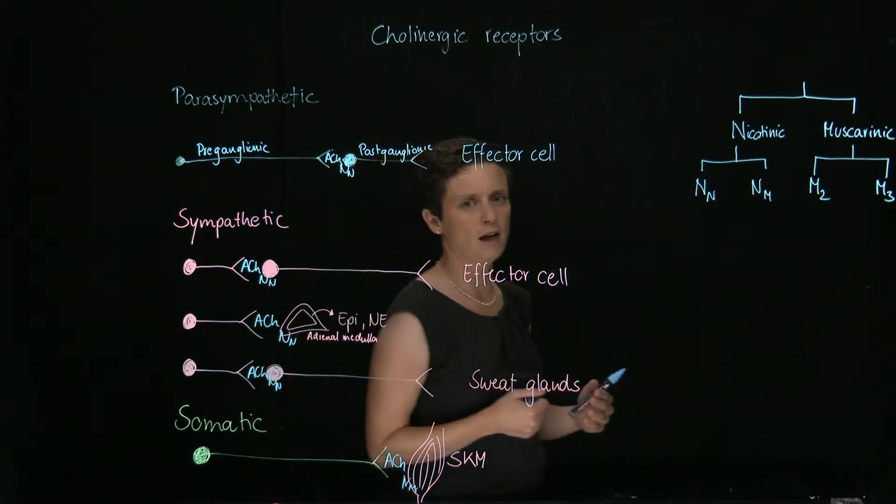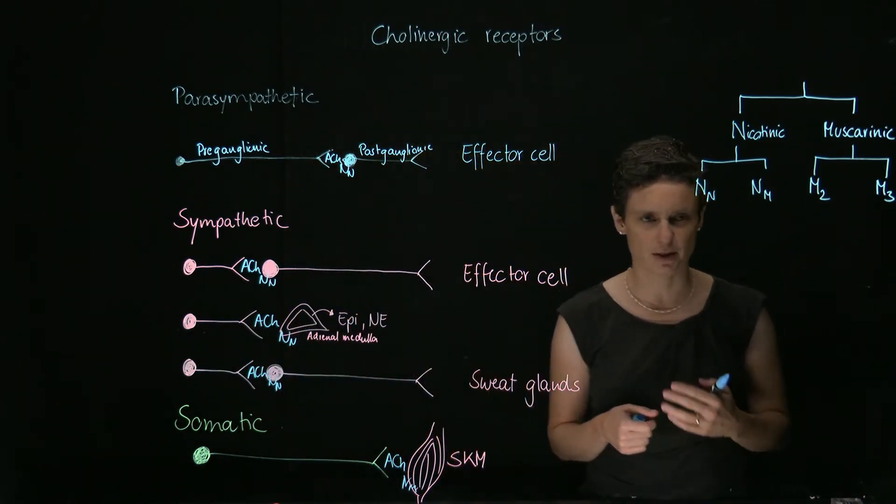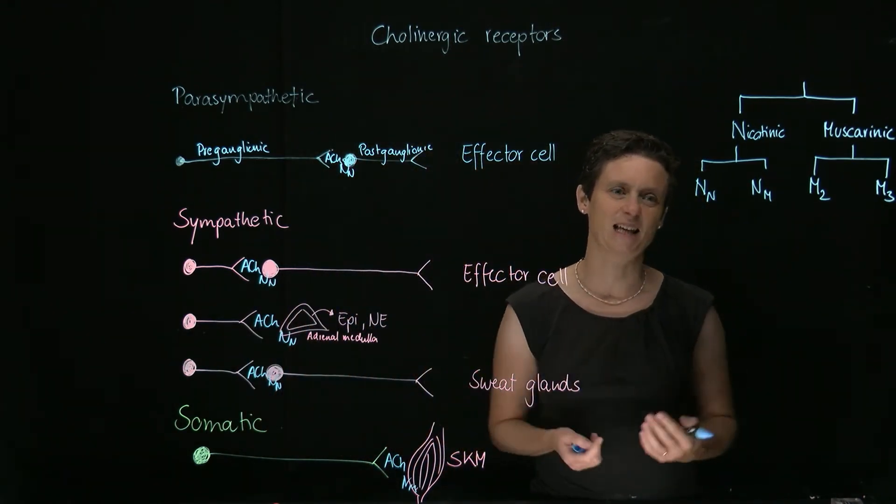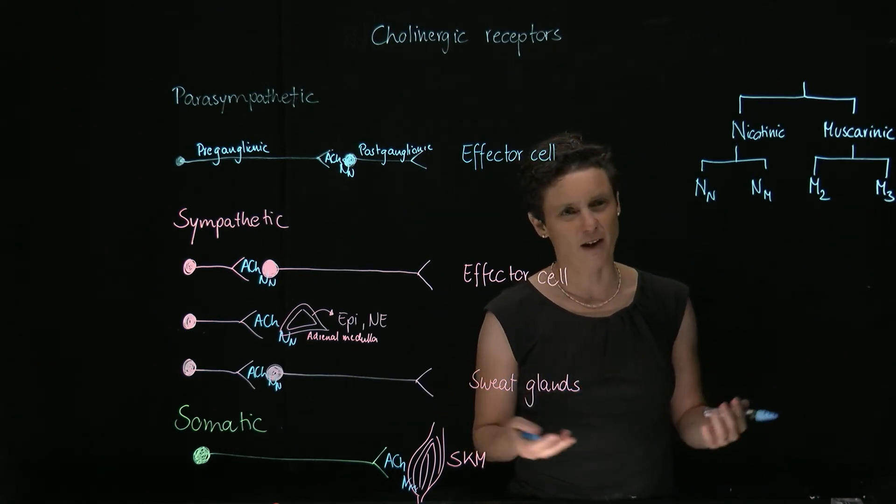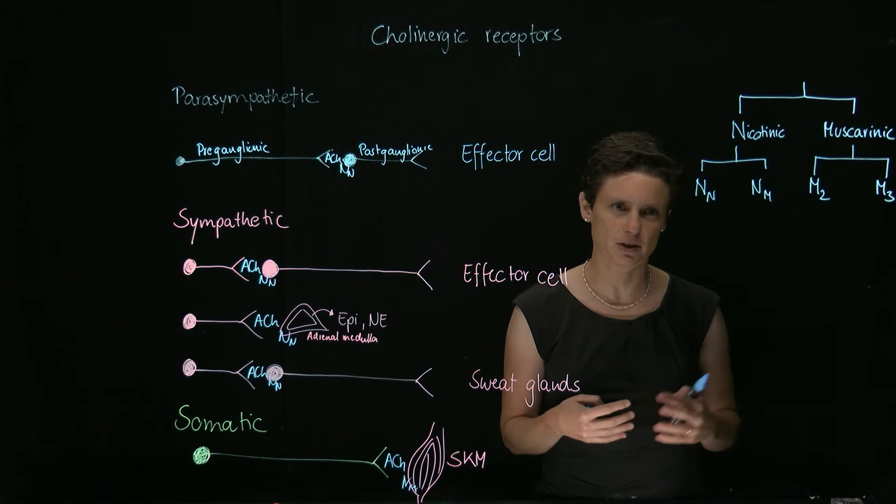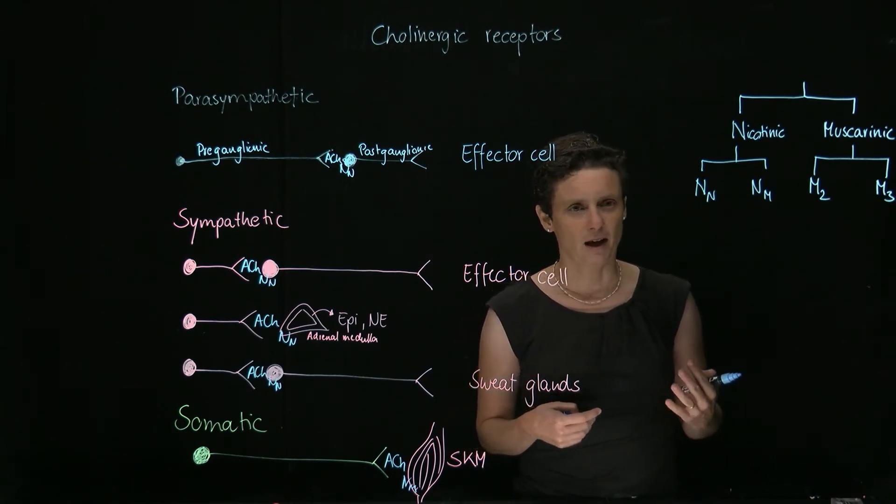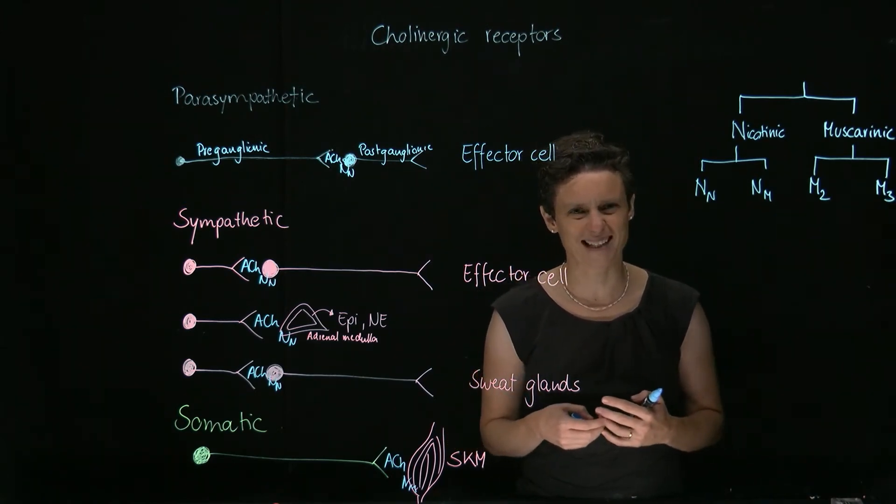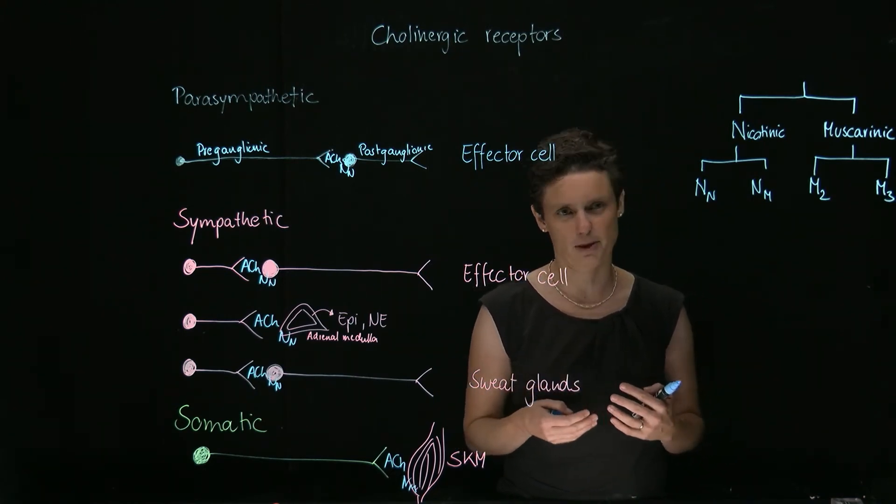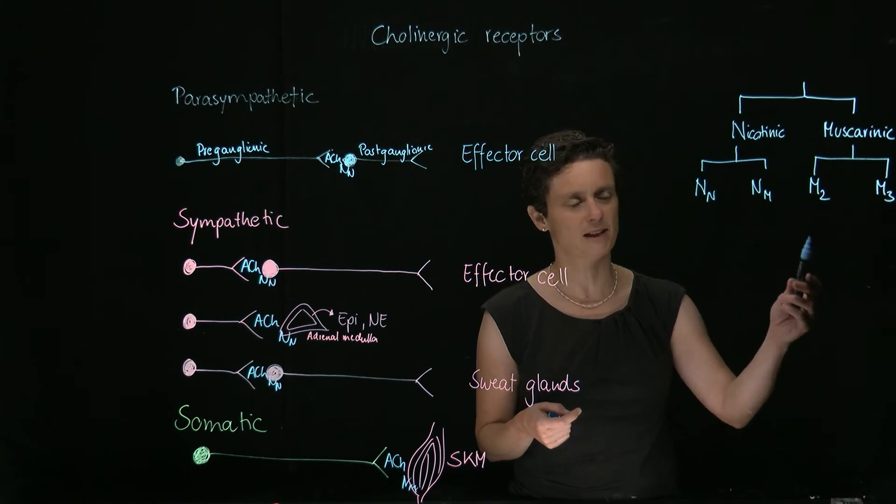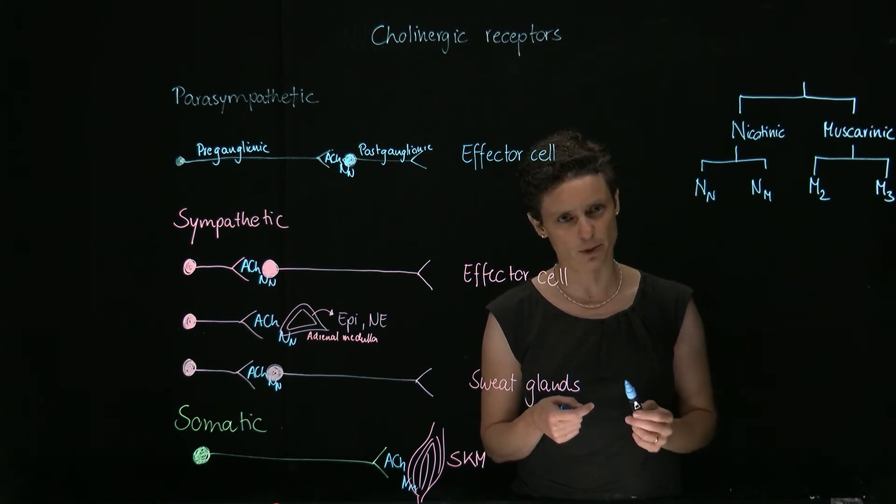Now we're going to move over to the muscarinic receptors. These are the receptors that sit at the effector organs. We actually have five subtypes of muscarinic receptors, M1 to M5. M1, M4, M5 are very important in the CNS, but we don't worry so much right now when we're thinking about the autonomic nervous system, which really comes down to the M2 and the M3 receptor.